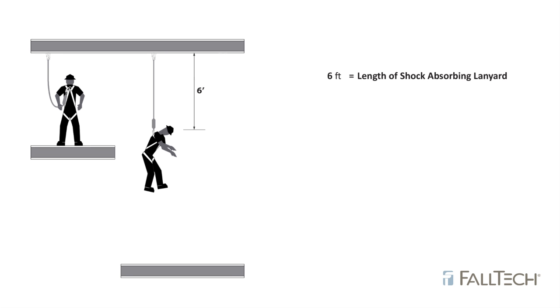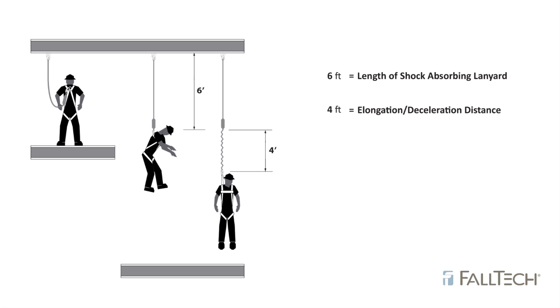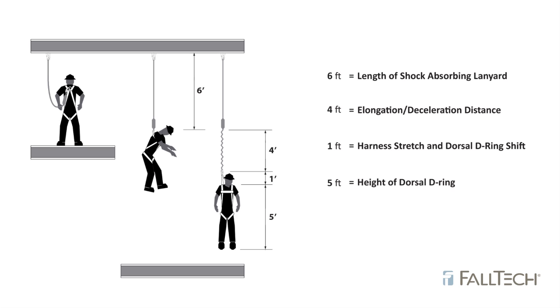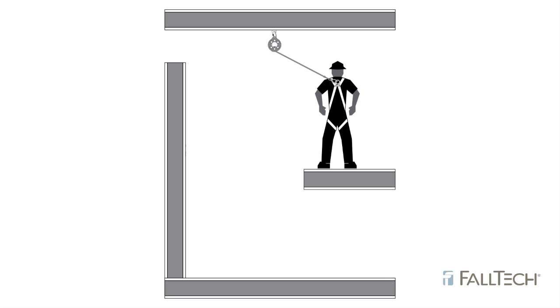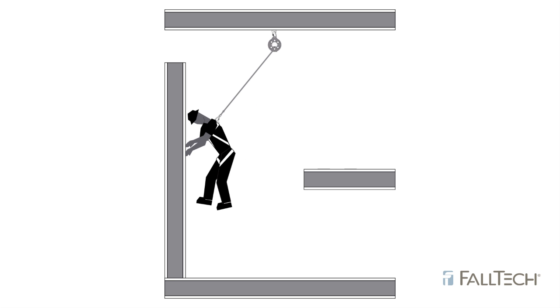When choosing a lanyard or SRL, it's important to consider your application and calculate the distance of clear-fall needed in order for the fall arrest system to activate and keep the worker from hitting the lower level. Typical clear-fall calculations when connected to an overhead anchorage take into account the length of the shock-absorbing lanyard, the deceleration distance — the maximum allowable amount of elongation that may pay out of an energy absorber upon activation during a fall event — harness stretch and dorsal D-ring shift, the height of the dorsal D-ring, then add a safety factor to account for factors such as an improperly adjusted harness, actual worker height, or worker weight. In this example, the next lower level would need to be at least 17.5 feet below the anchor point to safely protect the worker. Make sure to consult the product manual for clear-fall calculations pertaining to the device you choose. Swing-fall occurs when the worker falls while not being directly beneath the overhead anchor point, which can cause the worker to swing into adjacent obstructions rather than dropping straight down.